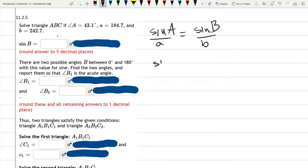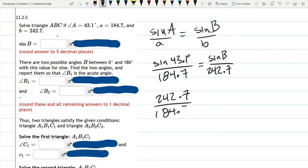We're just going to plug in all the values we're given. Angle A is 43.1 degrees, side A is 184.7. And I probably should have done some algebra first before putting the numbers in. We have sine B on the top, so I'm going to multiply by that denominator to both sides. So we have 242.7 over 184.7 and sine 43.1 degrees. So this is sine B.